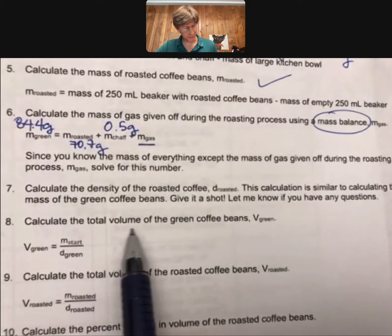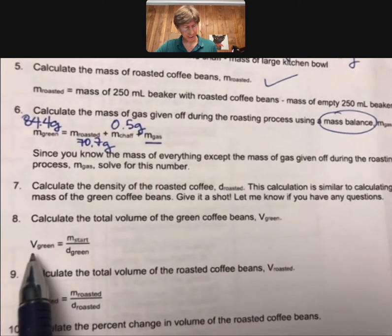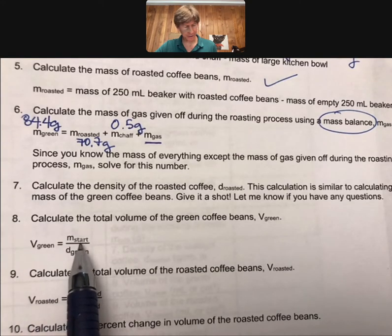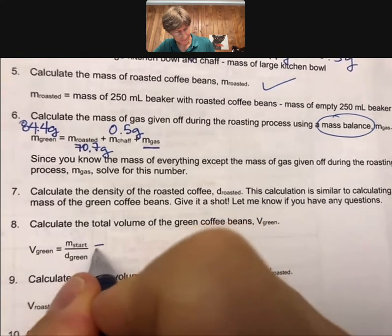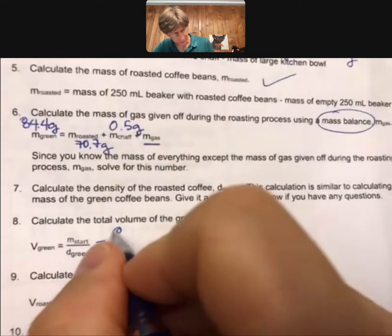Now, calculate the total volume of the green coffee beans. That's going to be, well, we know V green is what we're solving for. We know the mass at the start, and we know the density of our green beans. That's going to be, mass at the start was 84.4 grams.